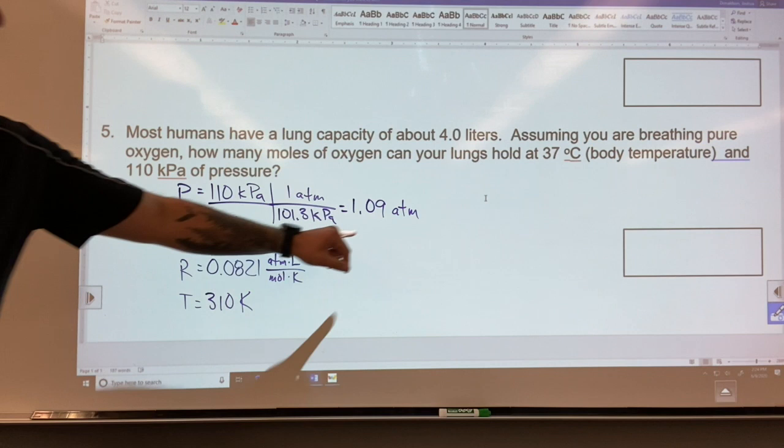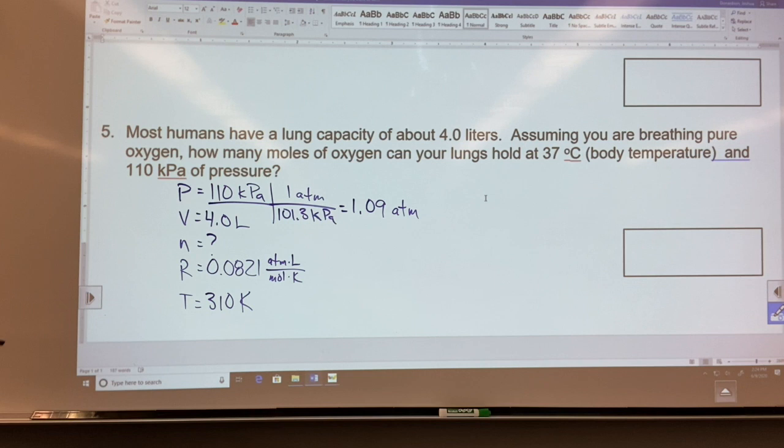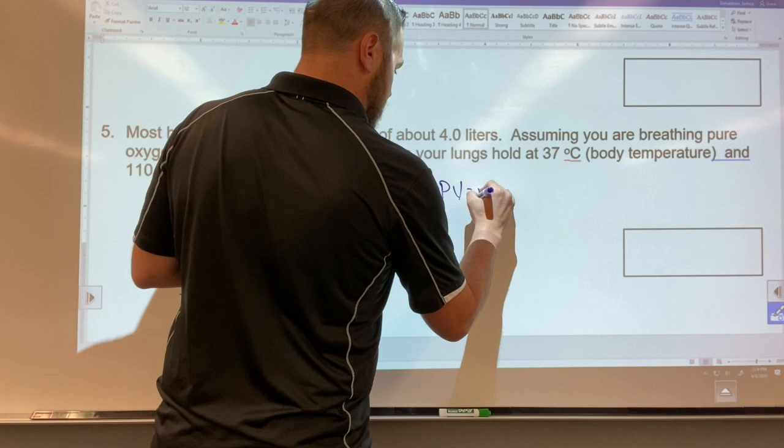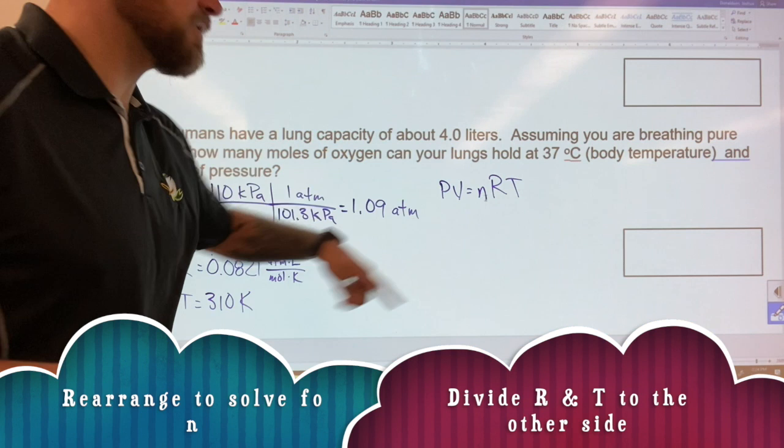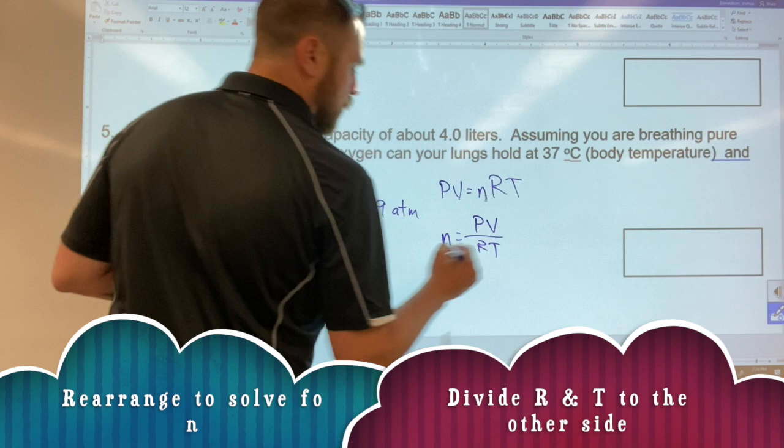So now I have a pressure, a new pressure that I'm going to use, I have a volume, I'm solving for number of moles, I have an R, I have a T. So my equation is PV=nRT but I need to rearrange that to solve for n because that's what I want to solve for. If I rearrange that I get that n is PV over RT. Now I can go in, plug in my numbers and solve.